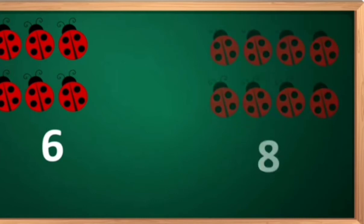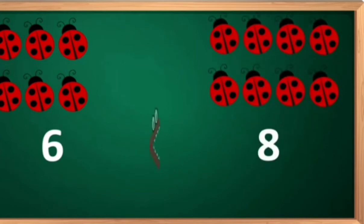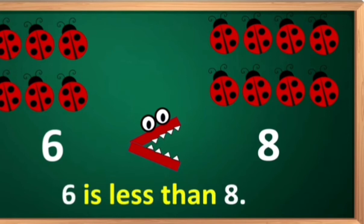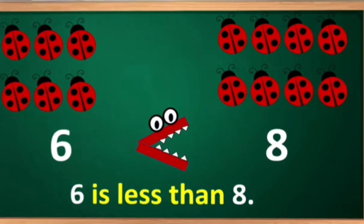Now see here. There are six bugs, and there are eight bugs. Which side will the crocodile open its mouth? Of course, towards the bigger number — that is number eight. Six is less than number eight, and eight is more than six.